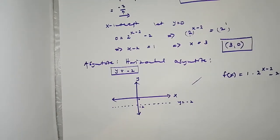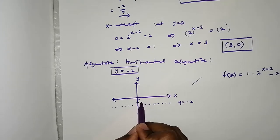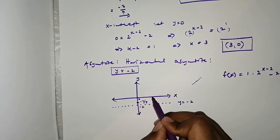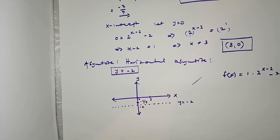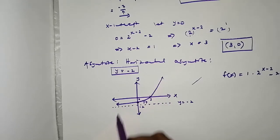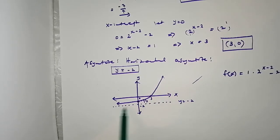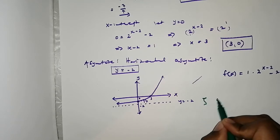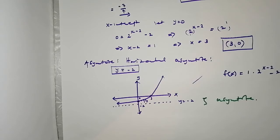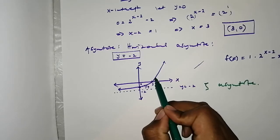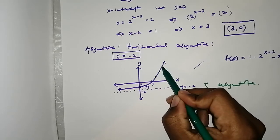Let us sketch the function. The y-intercept is negative 7 over 4, and the x-intercept is (3, 0). Our exponential function approaches the asymptote y = negative 2. If you need extra points, you can calculate values like x = 4, x = 5 using the table method we all learned in grade 8 or 9.